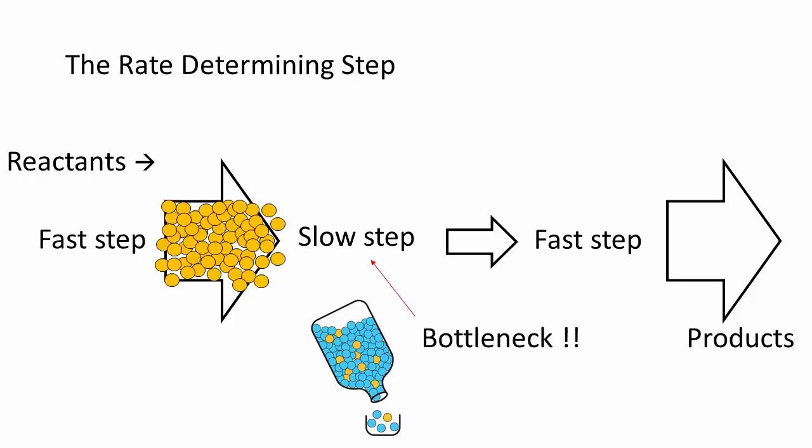When one step is much slower than all the other steps, we say that it is the rate-determining step, and the global reaction's kinetics will match the kinetics of this step. You cannot go faster than your slowest step. So, if the rate-determining step involves a molecule of A and a molecule of B, the global reaction will be second order overall, first order in A and first order in B.